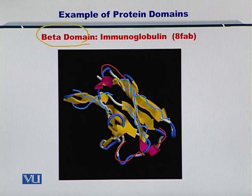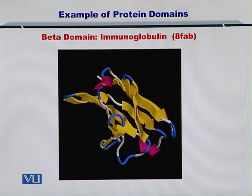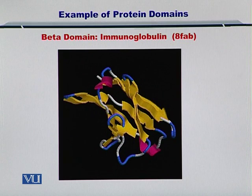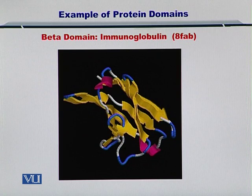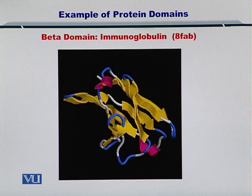So if you have such a protein, you can classify it as having a beta domain. In the first example we looked at an alpha domain protein with purely alpha helices, and in this case we have a beta domain containing purely beta sheets.